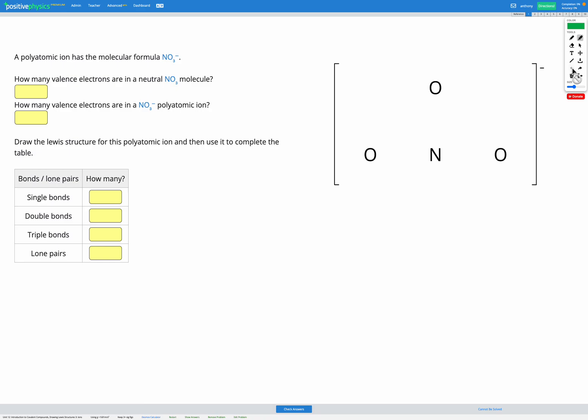In this question, we're trying to draw the Lewis diagram for a polyatomic ion. The ion in this question has a formula NO3 minus.